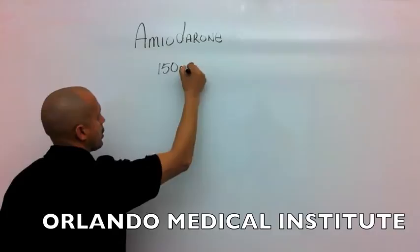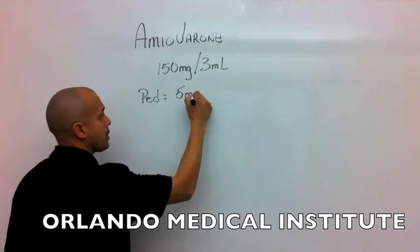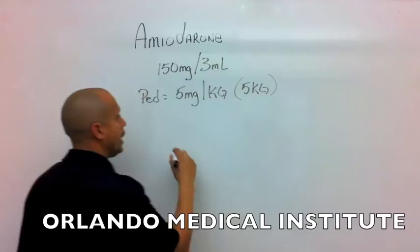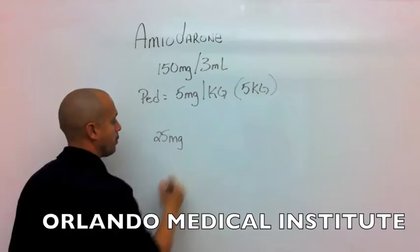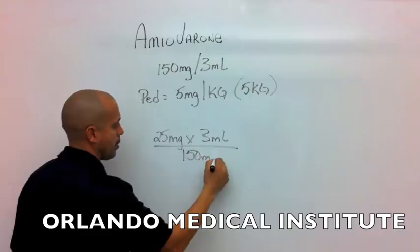Amiodarone is packaged 150mg in 3mL's. The pediatric dose for amiodarone is 5mg per kilogram. So, if our patient weighs 5kg, that's going to be a total of 25mg. We're going to go ahead and times that by 3mL's, the way it's packaged, divided by 150mg.